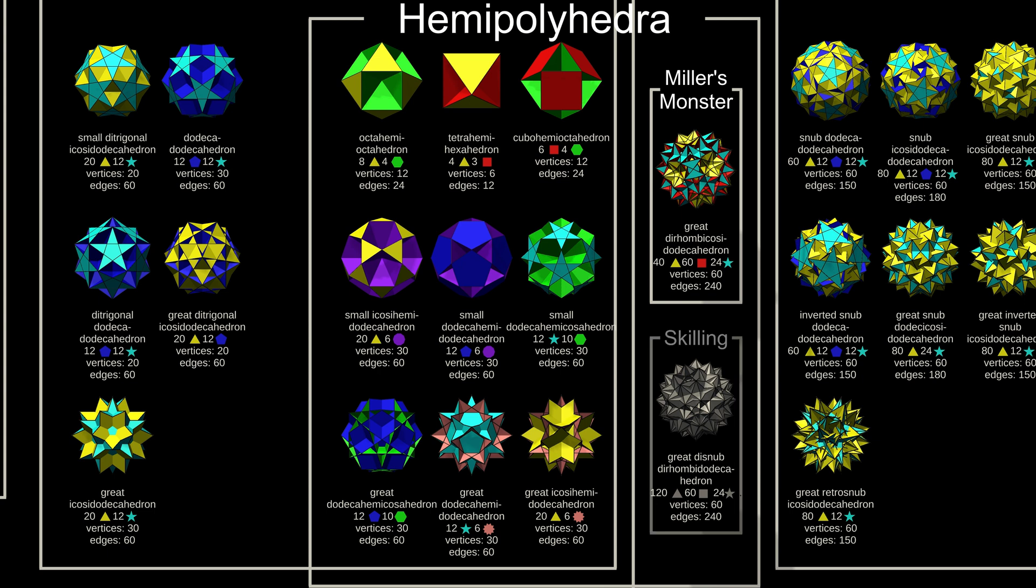And Skilling's figure has four faces meeting at some edges, so it isn't technically a valid polyhedron, but it is so famous I've included it in the chart in grey.